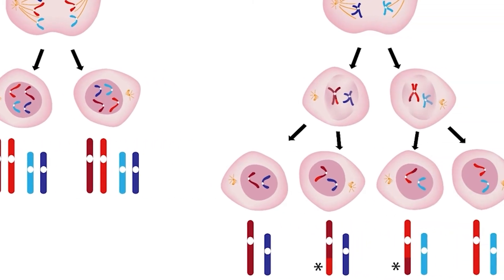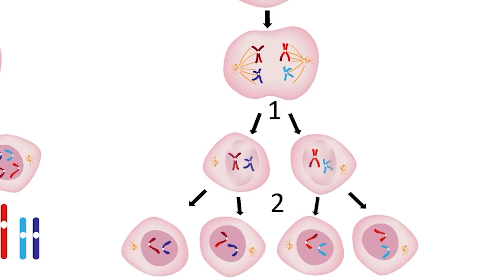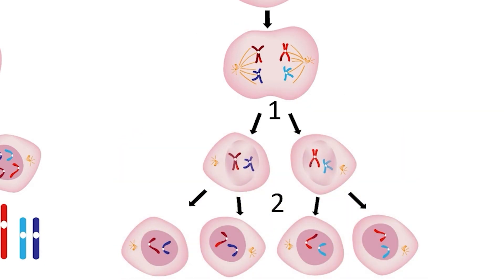By contrast, the daughter cells created by meiosis are all unique. This is because meiosis is a process that includes two consecutive cell divisions without a DNA replication event in the middle. In the first division, homologous chromosomes are separated. These are chromosomes that contain the same genetic information, but from different parental sources — for example, chromosome 1 from your mom and chromosome 1 from your dad. The second meiotic division is very similar to mitosis, since sister chromatids are separated into separate cells.